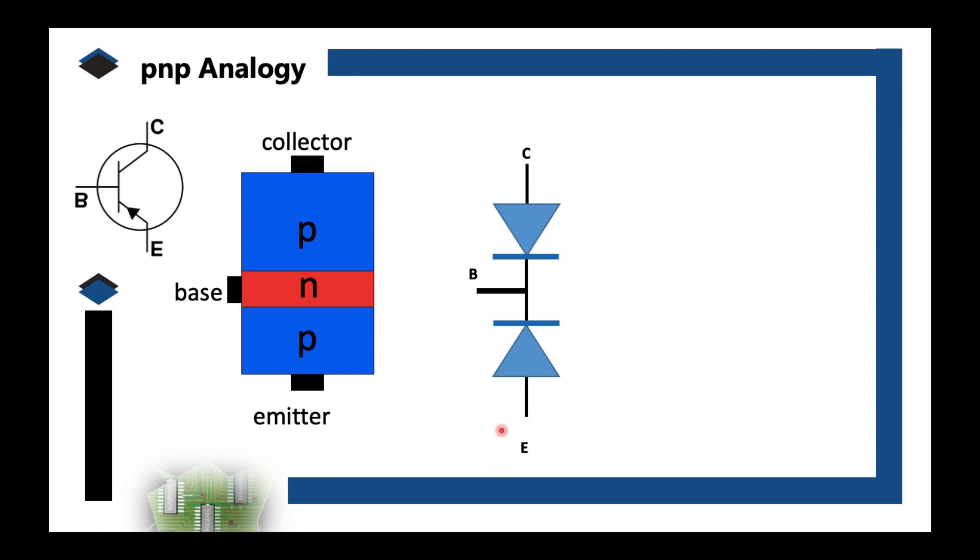If earlier the NPN looked like diodes with common cathode, this time you have diodes with common anode. And that's the representation you can use. Again, this is not a schematic symbol. The schematic symbol is this. This representation, where will you use it? You'll only use it when you troubleshoot a BJT using your tester, specifically your ohmmeter.